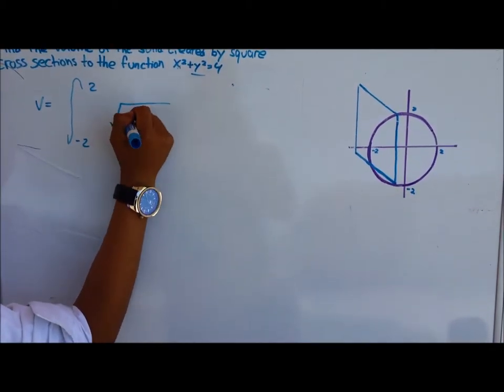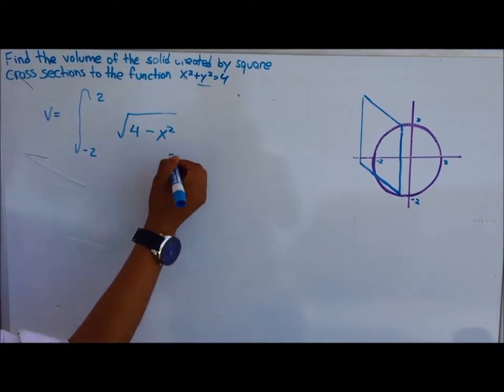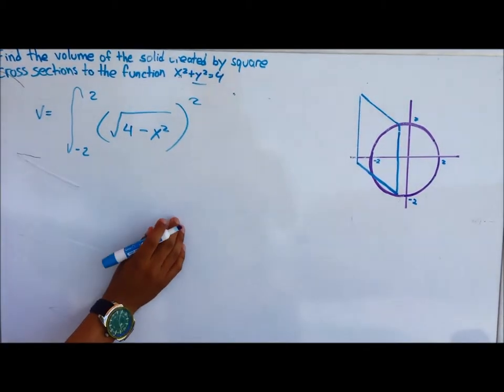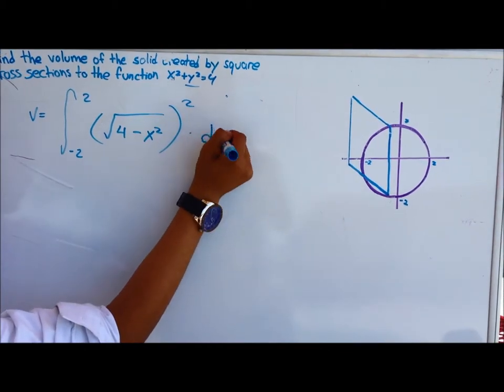And you take the function, which in this case would be radical 4 minus x squared, and you square it due to the area of the square cross section times dx, which is the weight.